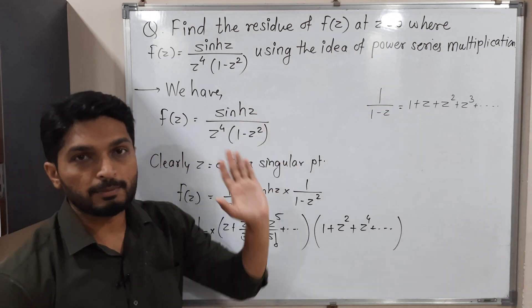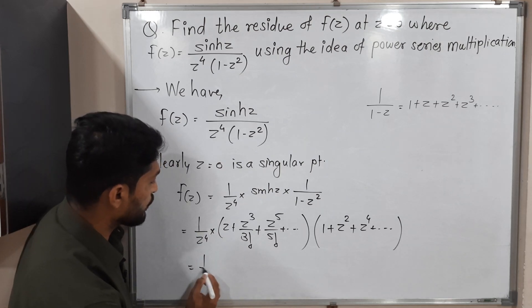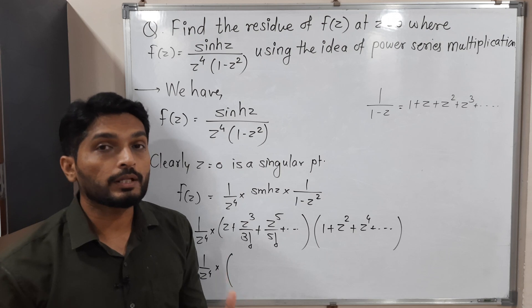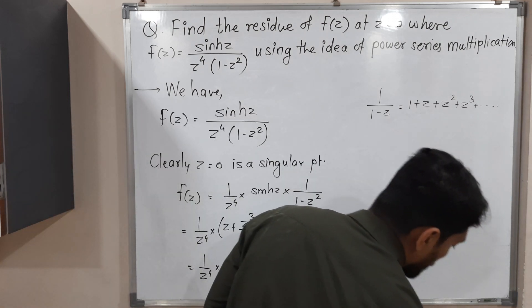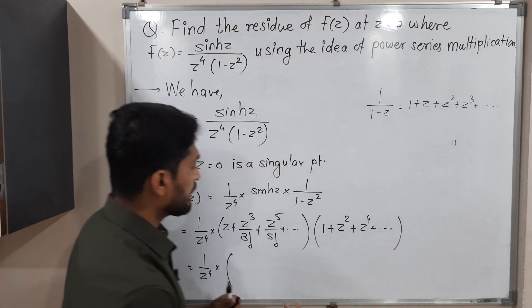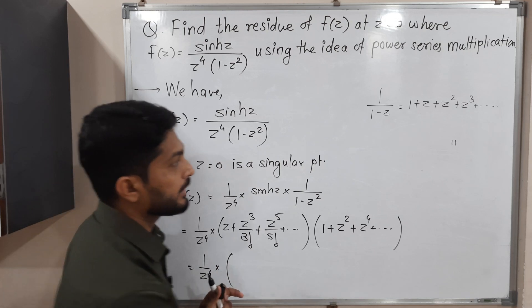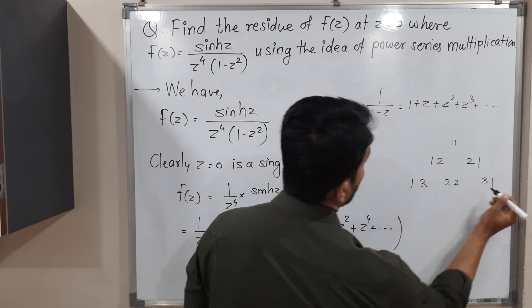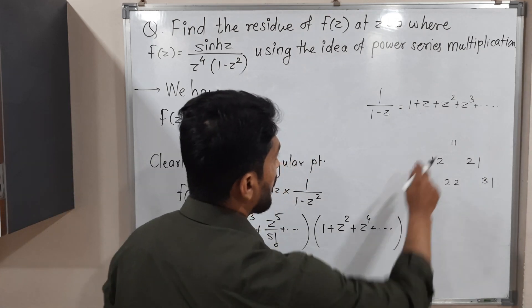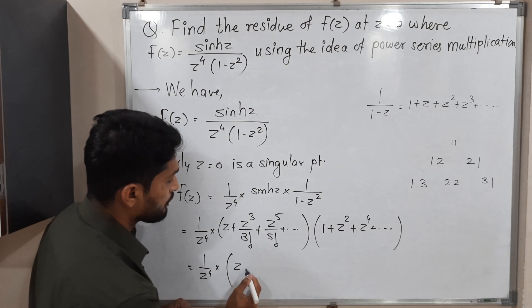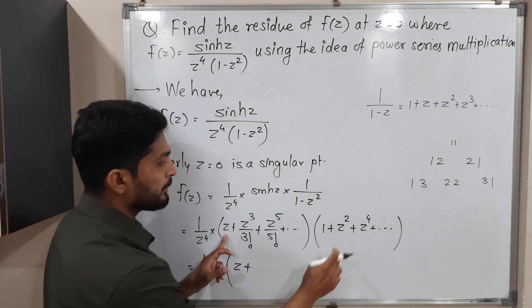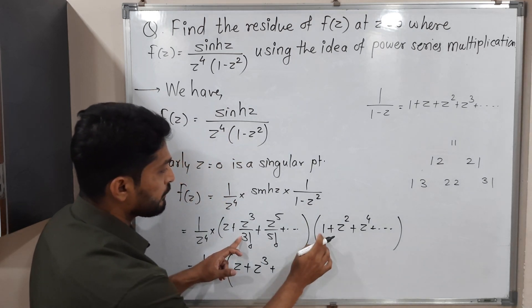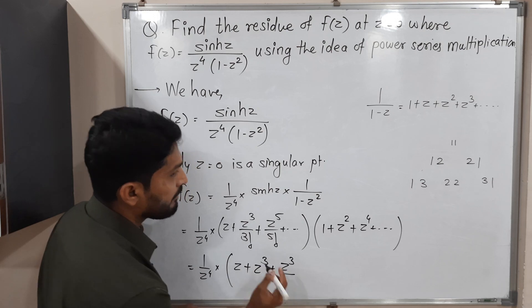Let us use the concept of power series multiplication to find the product. Some of you might get confused since both series have infinite terms, so how to take the product. The approach is: first do term 1 × term 1, which is z times 1 giving z. Next, term 1 × term 2 gives z times z² = z³, plus term 2 × term 1 gives z³ over 3 factorial, i.e., z³ over 6.